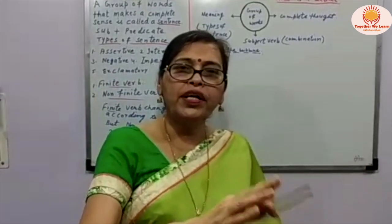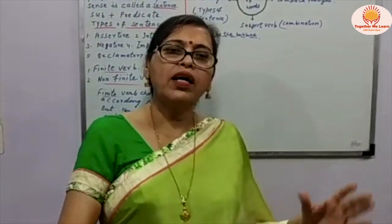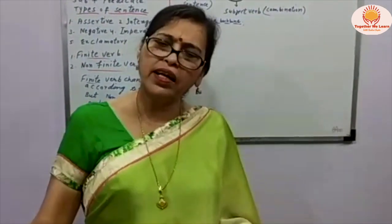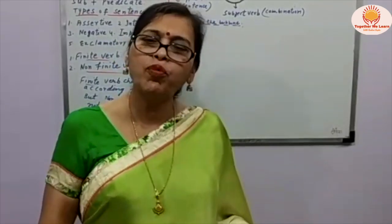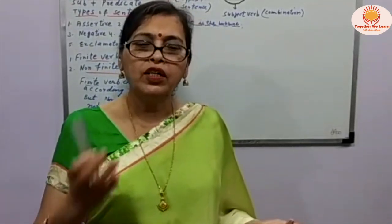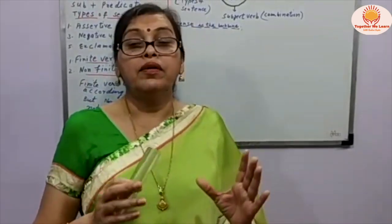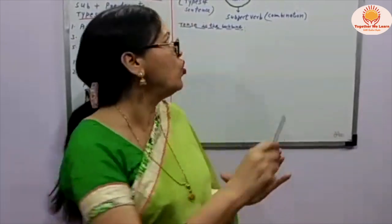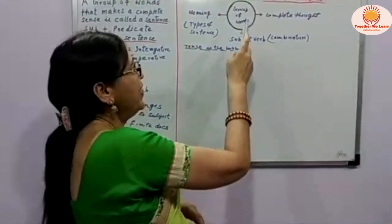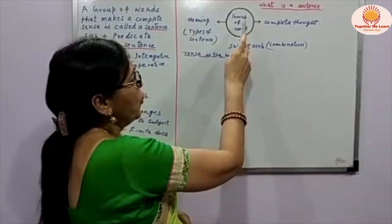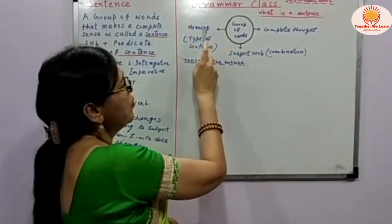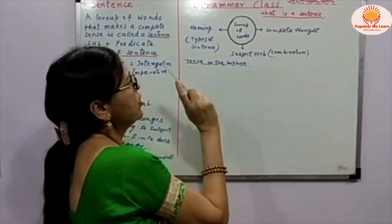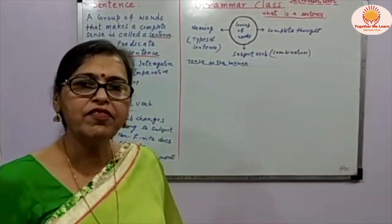A group of words that makes a complete sense is called a sentence. The words may look like they are good individually, but the sense is not good. When you have the complete sense together, the sentence is correct. This is the diagram of the word — a group of words with a complete thought — and then we call it a sentence.